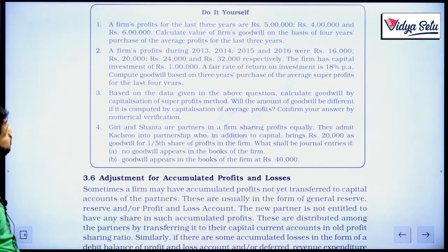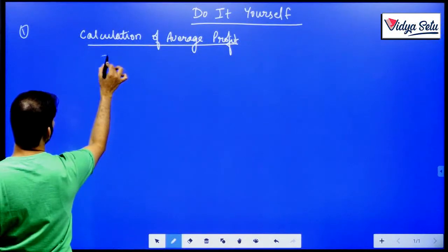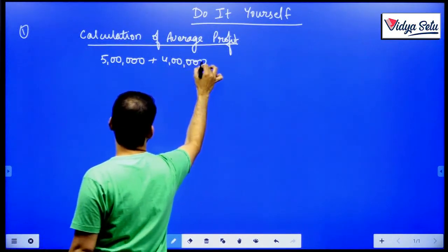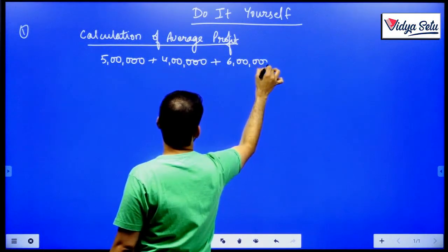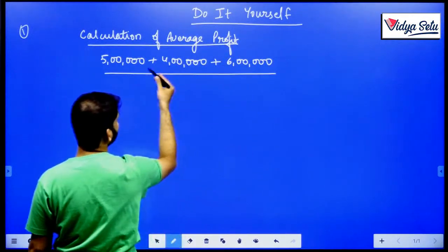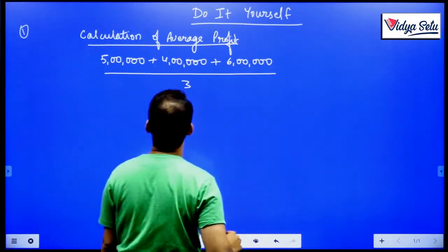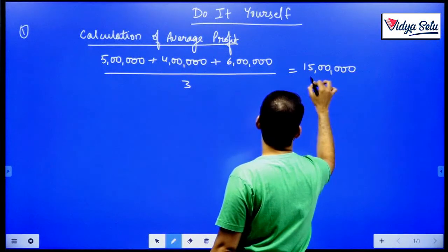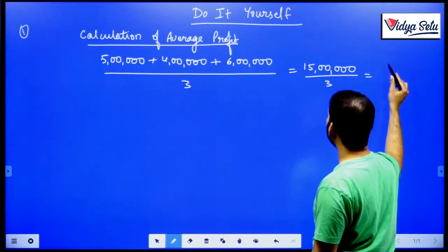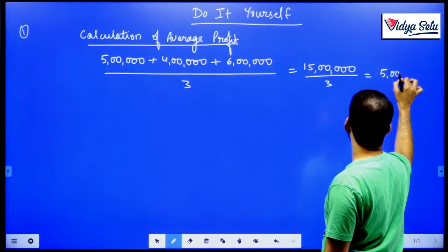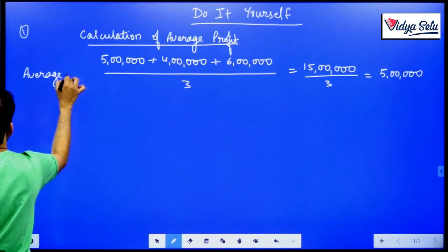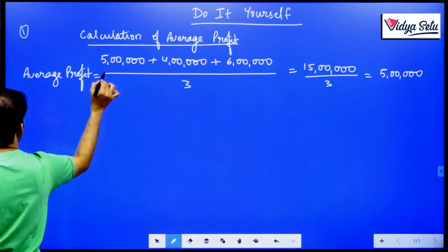Calculation of average profit of 5 lakhs, 4 lakhs and 6 lakhs. So, 5 lakhs plus 4 lakhs plus 6 lakhs divided by 3 years. 5 plus 4 is 9, plus 6 is 15, divided by 3 — the average profit comes to rupees 5 lakhs.